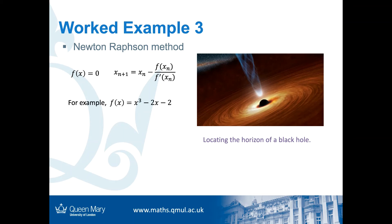For example, if my function is x³ - 2x - 2, and this function characterizes the horizon of the black hole, which is the boundary of a black hole. So, if we can solve this function equals 0, then we can find where the horizon of the black hole is. So, to solve this equation by Newton-Raphson method, we first need to calculate the first derivative of this function. It is 3x² - 2.